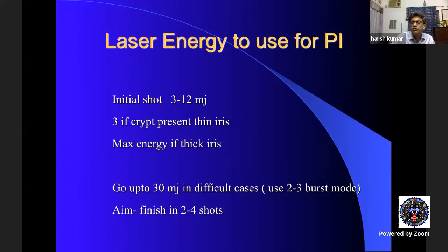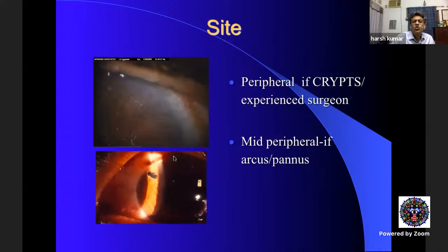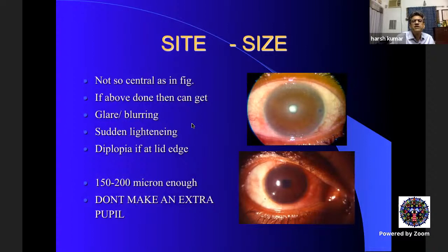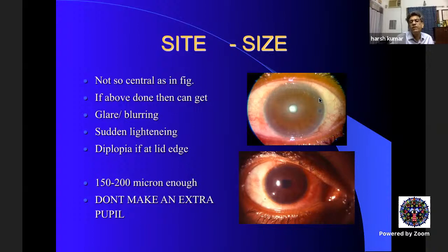The site should not be too peripheral due to arcus senilis and risk of hitting the ciliary body — aim mid-peripheral. Do not make too large an iridotomy or it starts acting like a pupil. Current teaching is to target wherever the angle is deepest, farther from the cornea, wherever there is a crypt. Avoid the lid margin area as it can cause diplopia, glare, and blurring from dysphotopsia. The size of iridotomy should normally be around 150 to 200 microns.